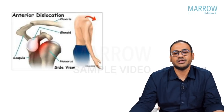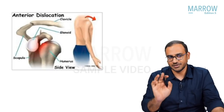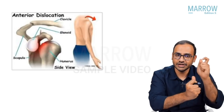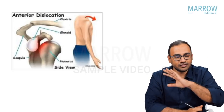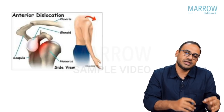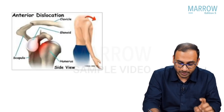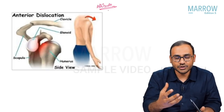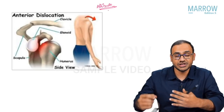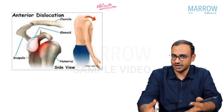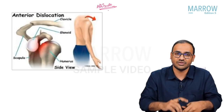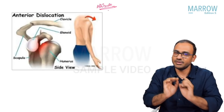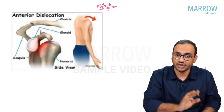Coming to the important things about dislocations: first, any dislocation is an emergency and we have to intervene and manage immediately. Second, the patient will present with a typical attitude — meaning the attitude of the limb, the position of the limb, the deformity with which the patient presents to the clinic. Just by looking at the patient with a peculiar attitude, you can make a clinical diagnosis of what type of dislocation the patient has.